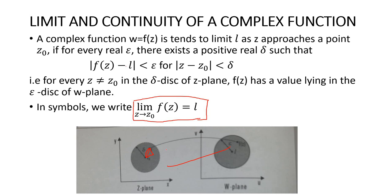There are an infinite number of possible ways for z to approach z0. For finding the limit of a complex function, we find the limit along all possible paths. Only if the limits along all these paths are unique does the limit of the complex function exist.